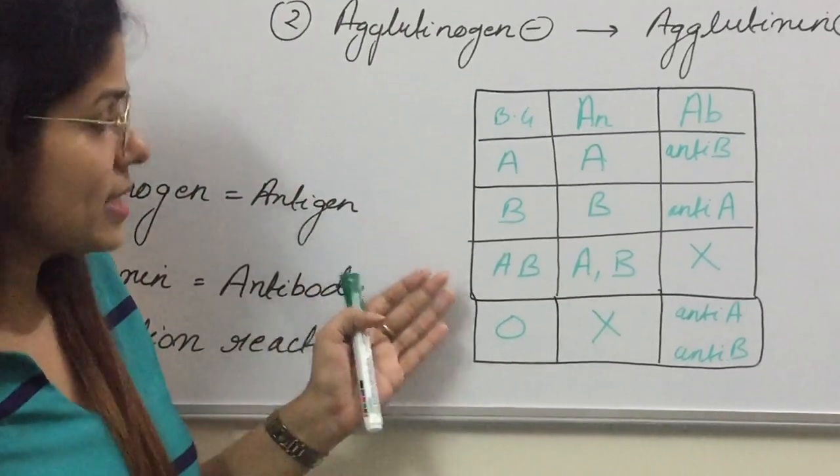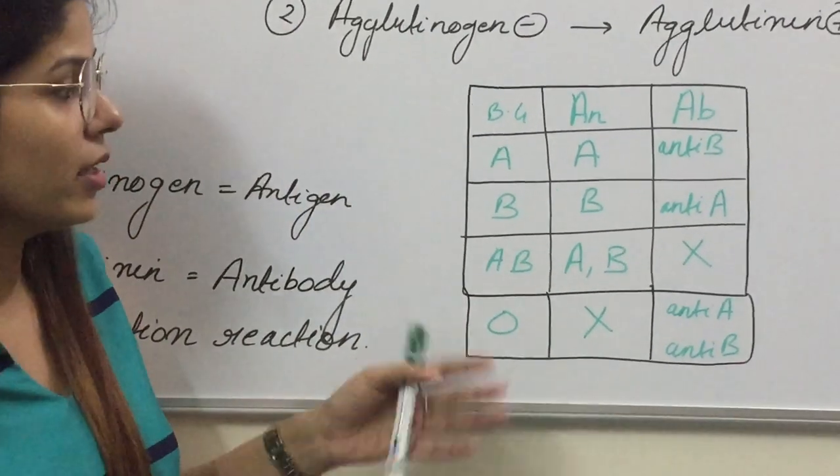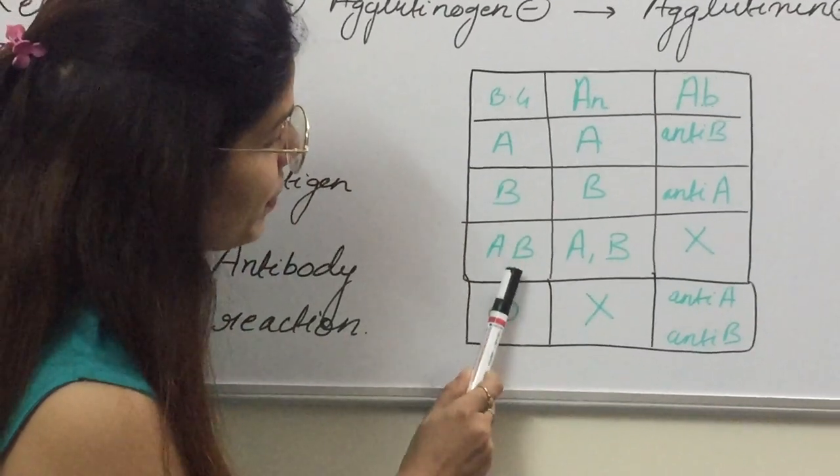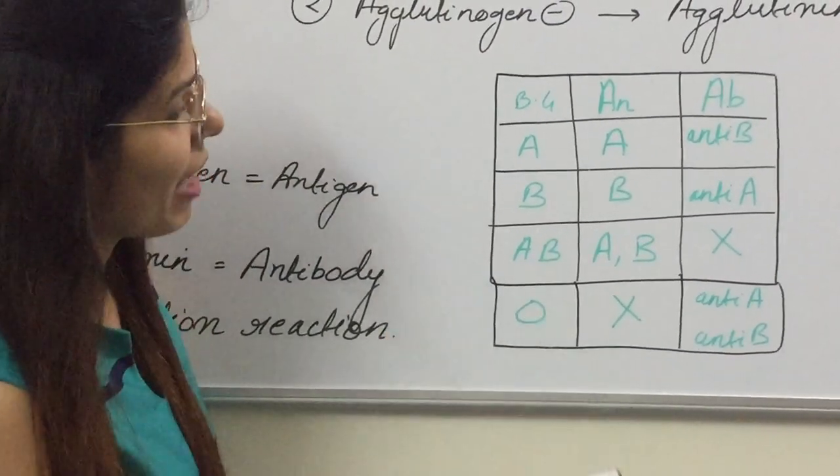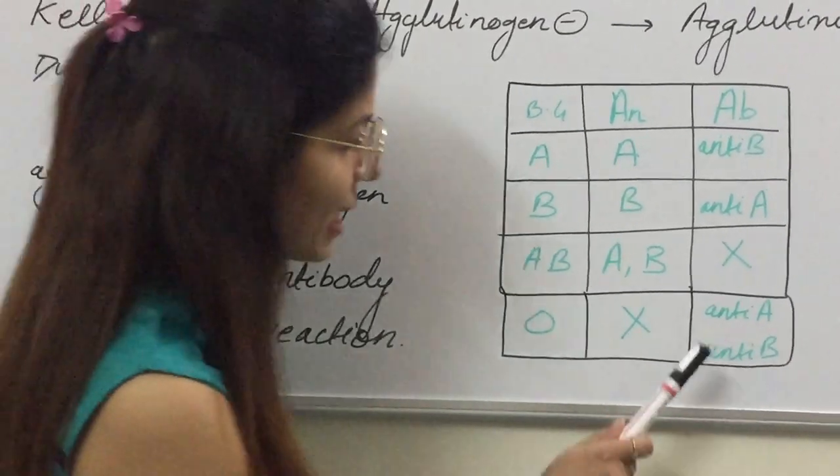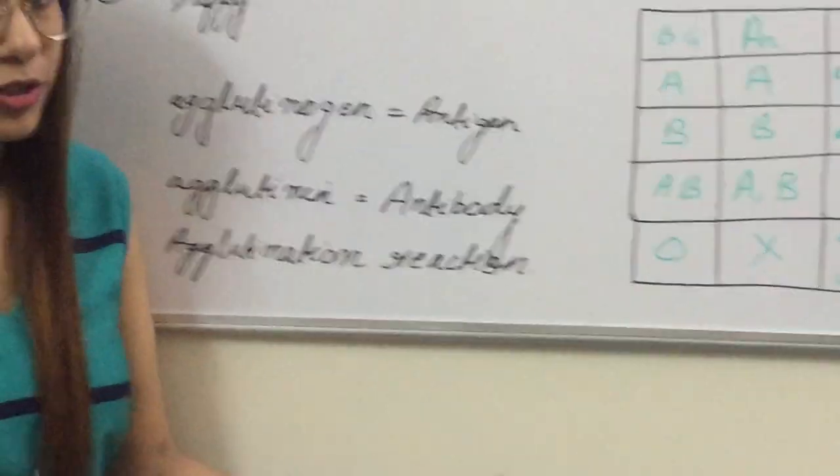The blood group AB has antigen A and B, and it has no antibody in the AB blood group. The fourth is blood group O which doesn't have any antigen but it has both the antibodies, anti-A as well as anti-B. This is the basic theory of the blood group system.